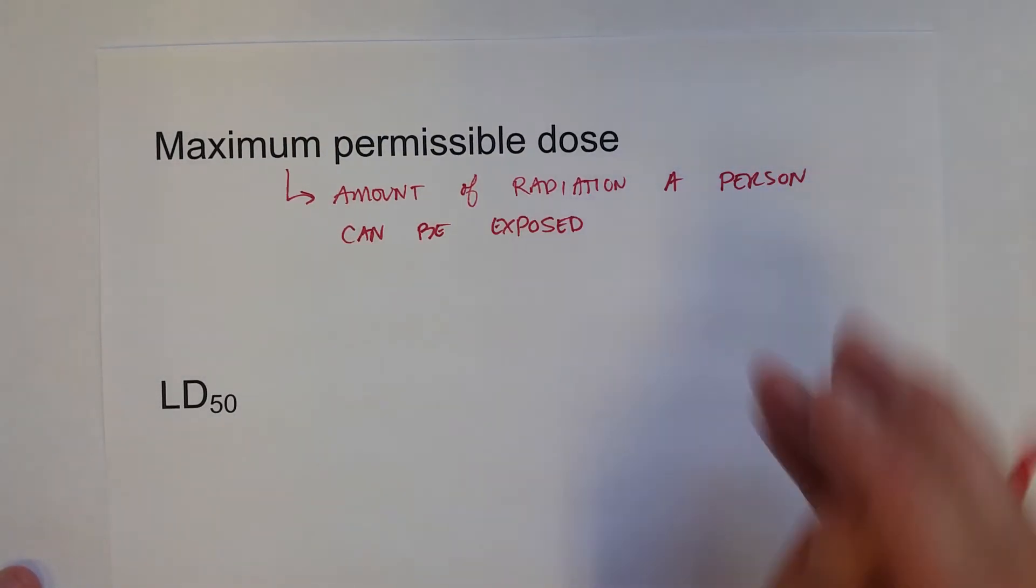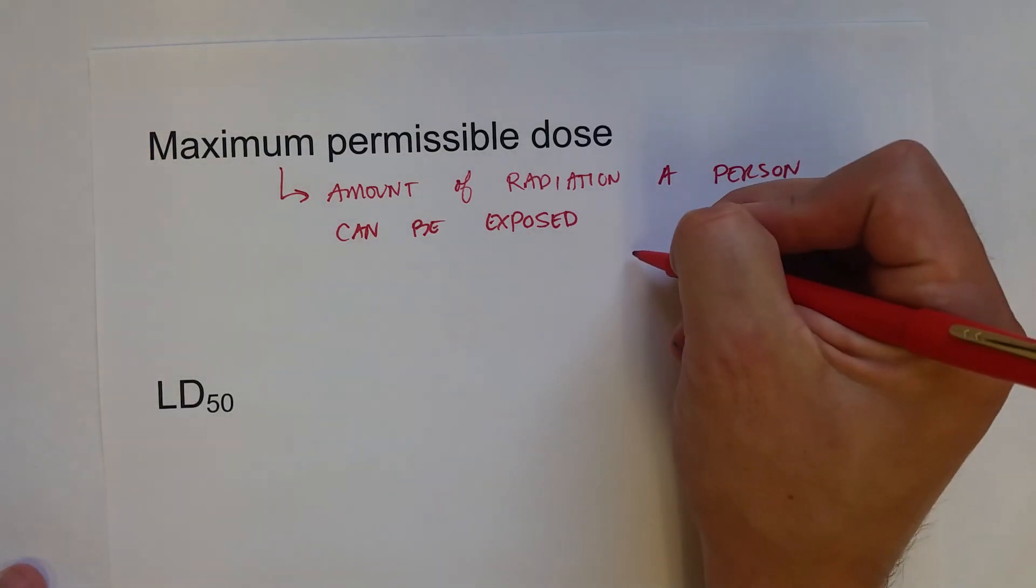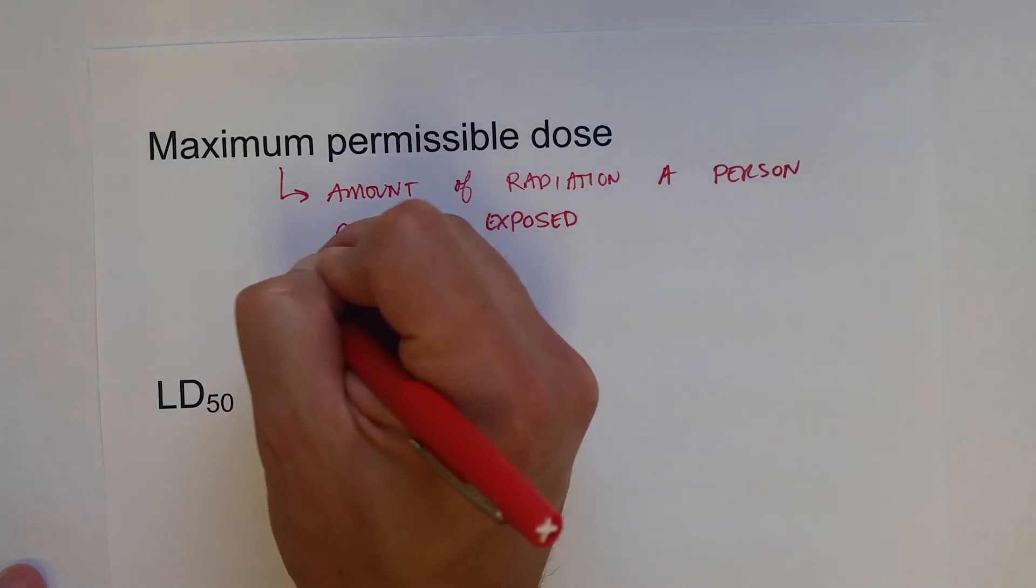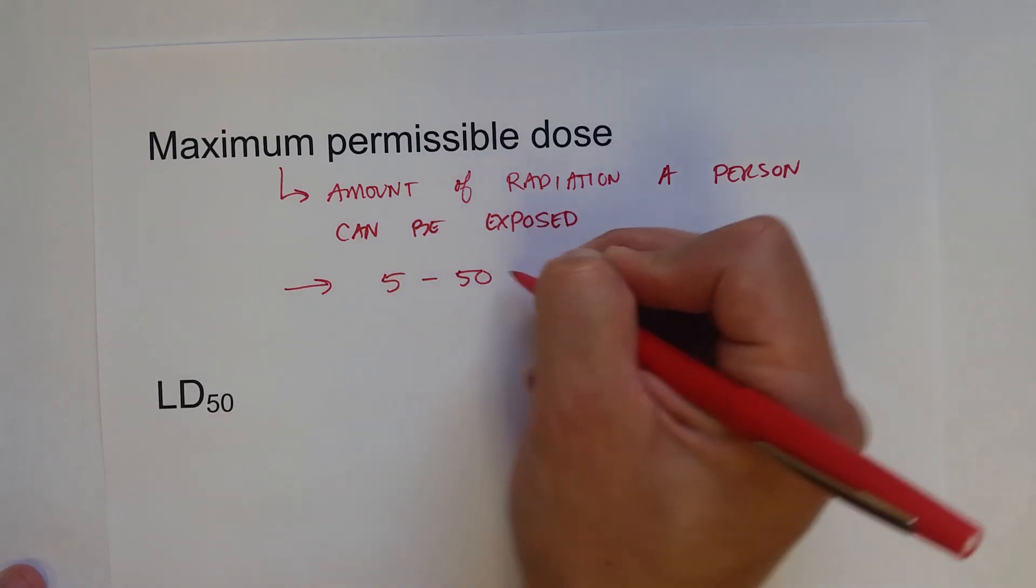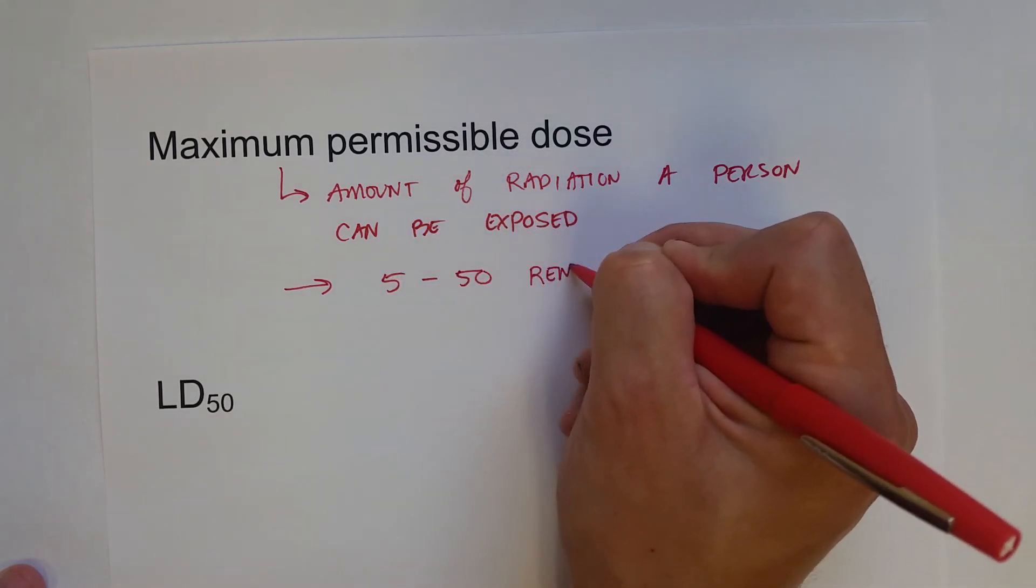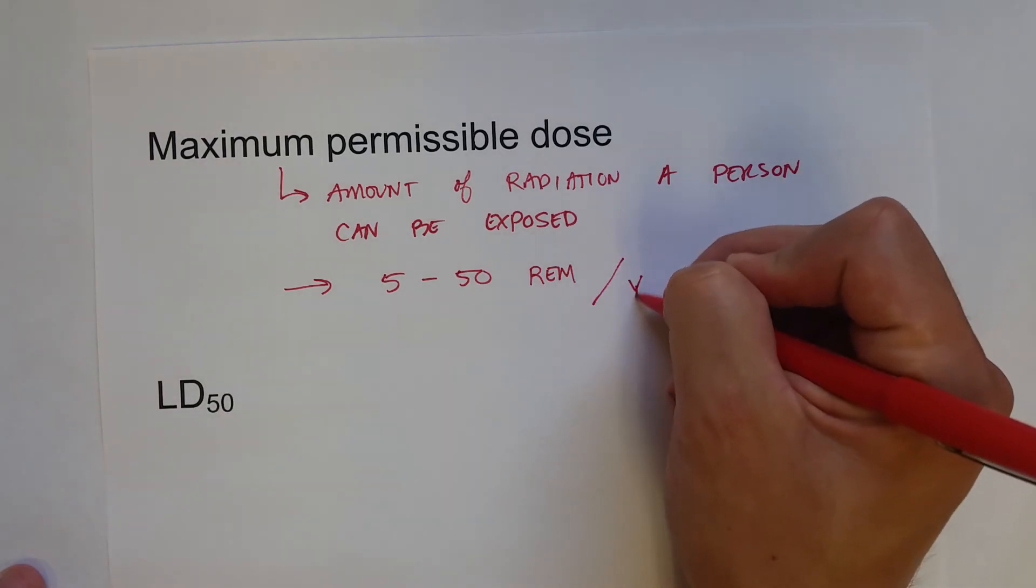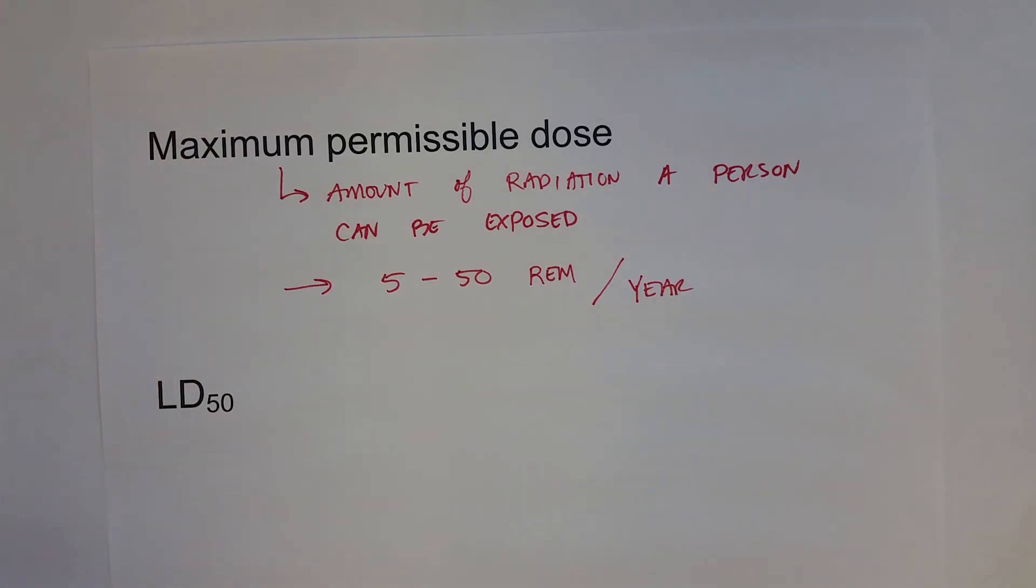So people working with x-rays or radioactive isotopes are exposed to radiation, and there's a safe amount that they can be exposed to. This is per unit of time, and these are on the order of 5 to 50 REM per year, depending on what area of the body.